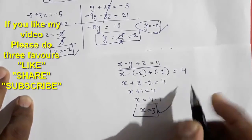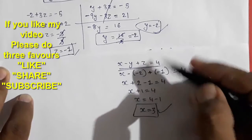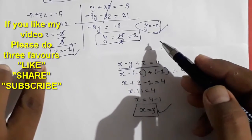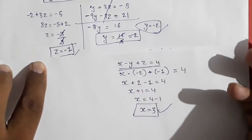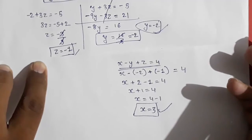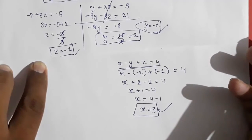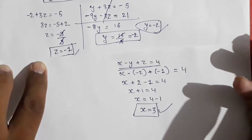We got all three values: x equals 3, y equals minus 2, and z equals minus 1. This is how we can solve any linear equation system with three variables. Thank you so much for watching. If you like it, please subscribe to my channel.